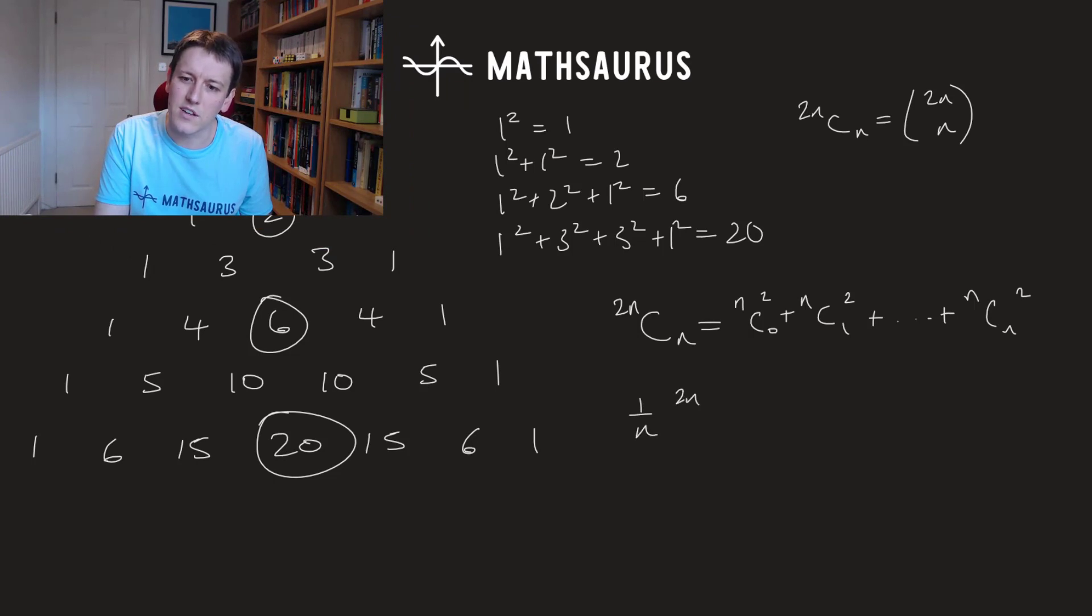If you do 1 over n plus 1 times 2n choose n these are known as the Catalan numbers. So the numbers we're getting here are very closely related to these Catalan numbers.